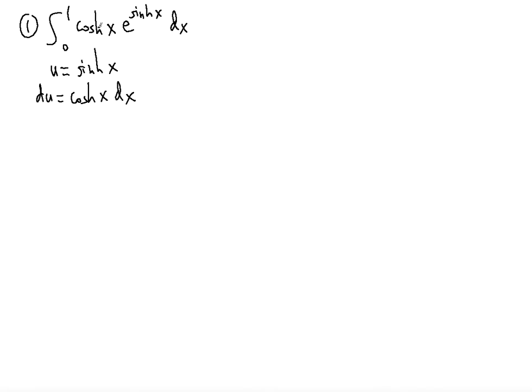Which is conveniently there for you. The cosh x dx is already there, so the du is already there and the e to the u is there as well.